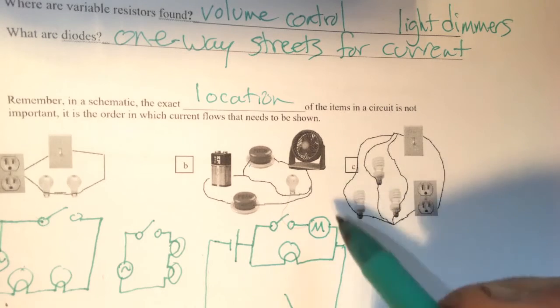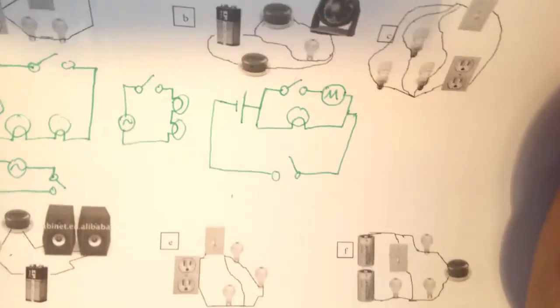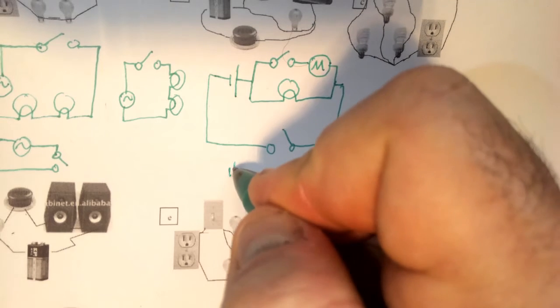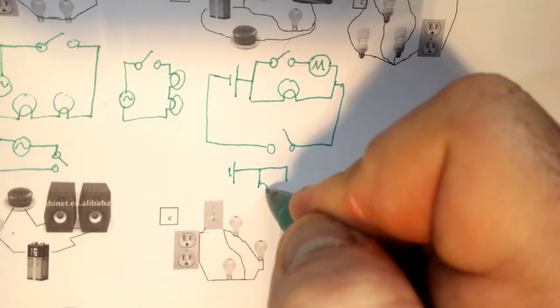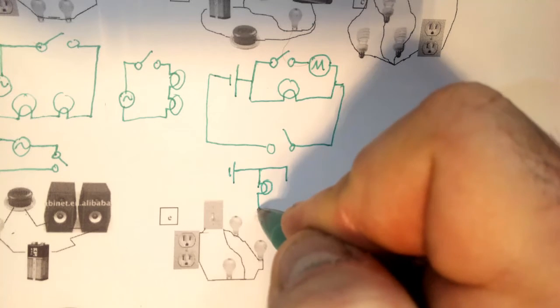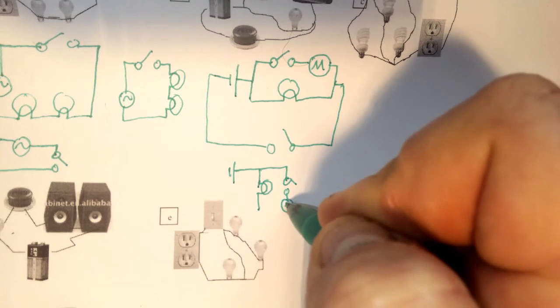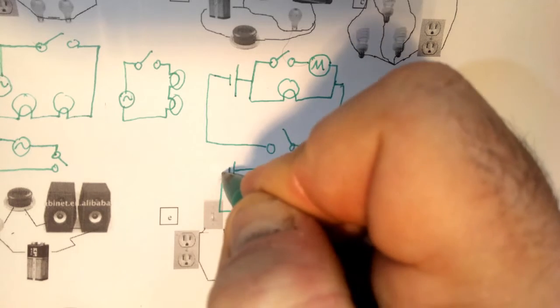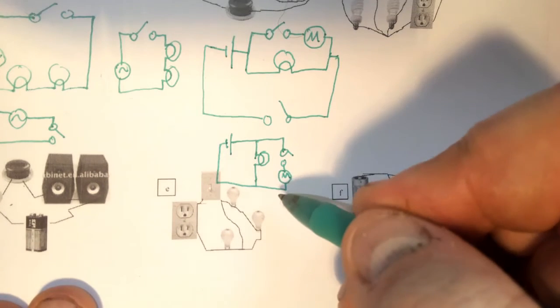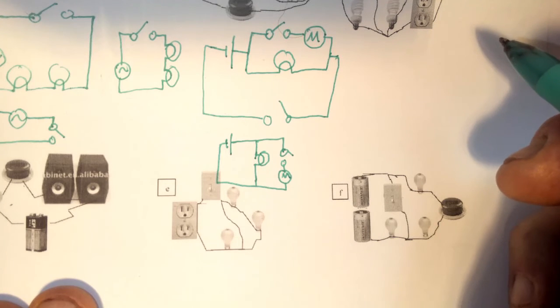Another way of drawing this is a little bit less complicated. It doesn't have this section the same. We could have the battery and then two branches this way. One has a light bulb, the other has a switch and a motor. Then it comes back together again to the battery. You can see that is a little bit more simple looking than up here, but the parts are in the same order.